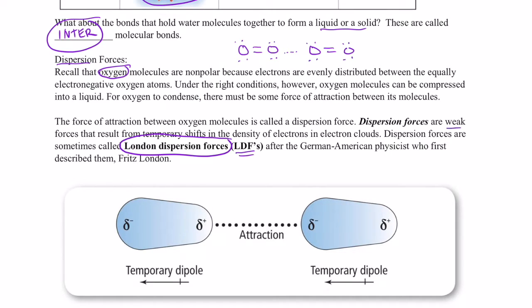Dispersion forces are weak forces that result from temporary shifts in the density of electrons in the electron cloud. Dispersion forces are sometimes called London dispersion forces, or LDFs, after the German physicist who first described them, Fritz London.